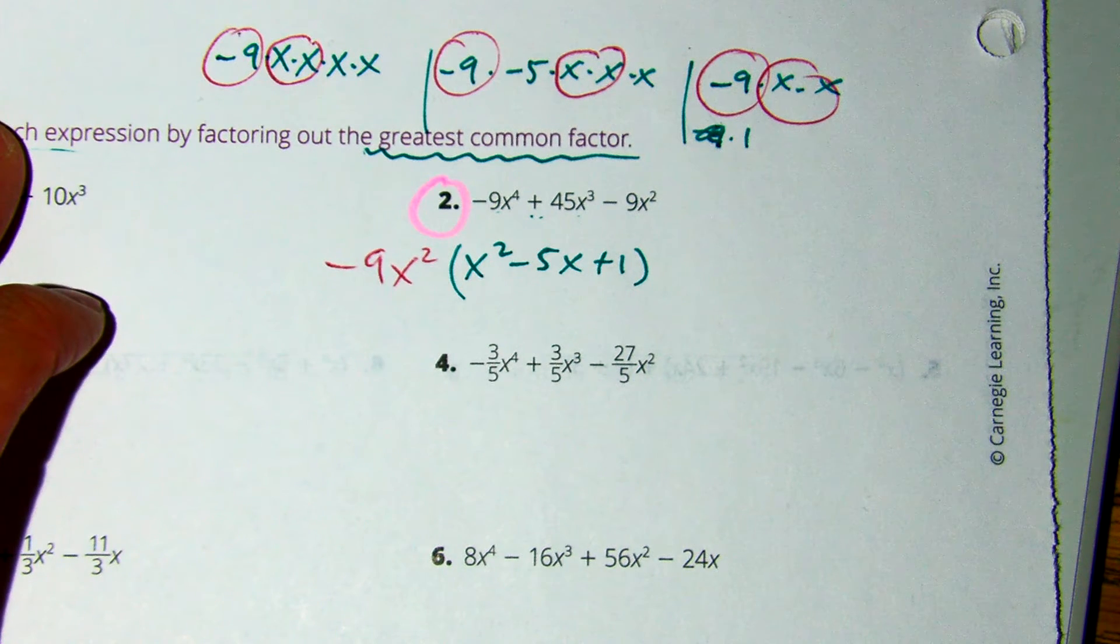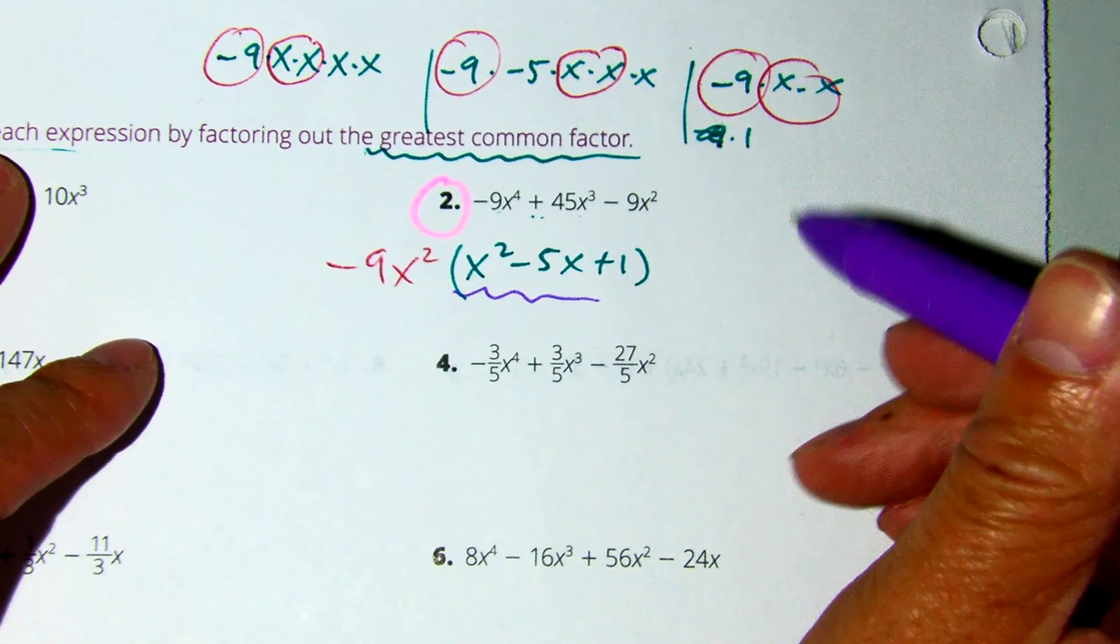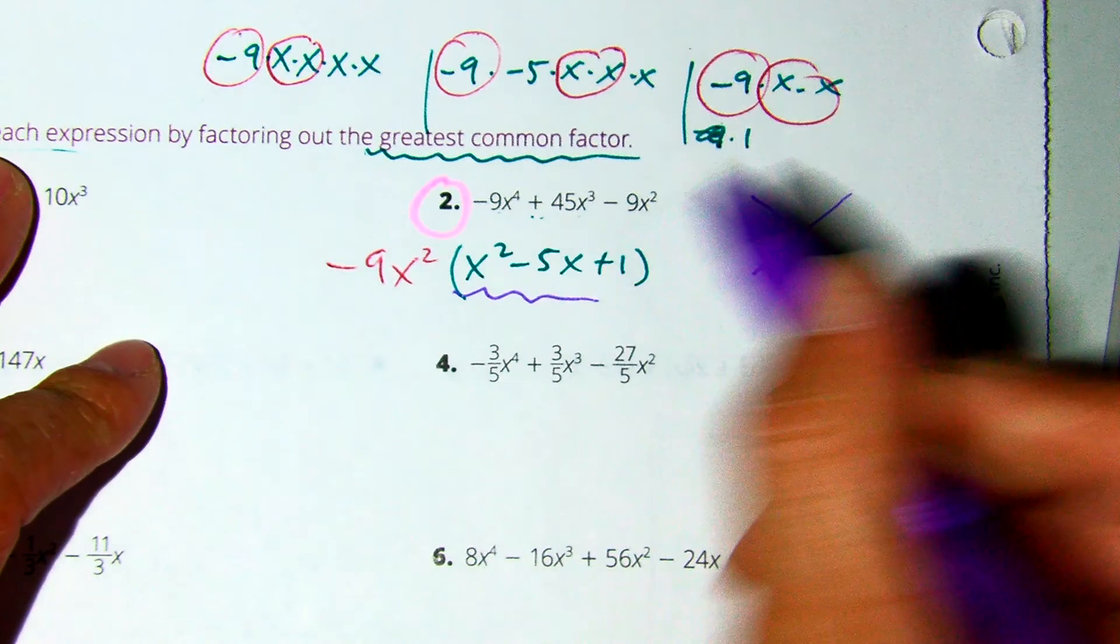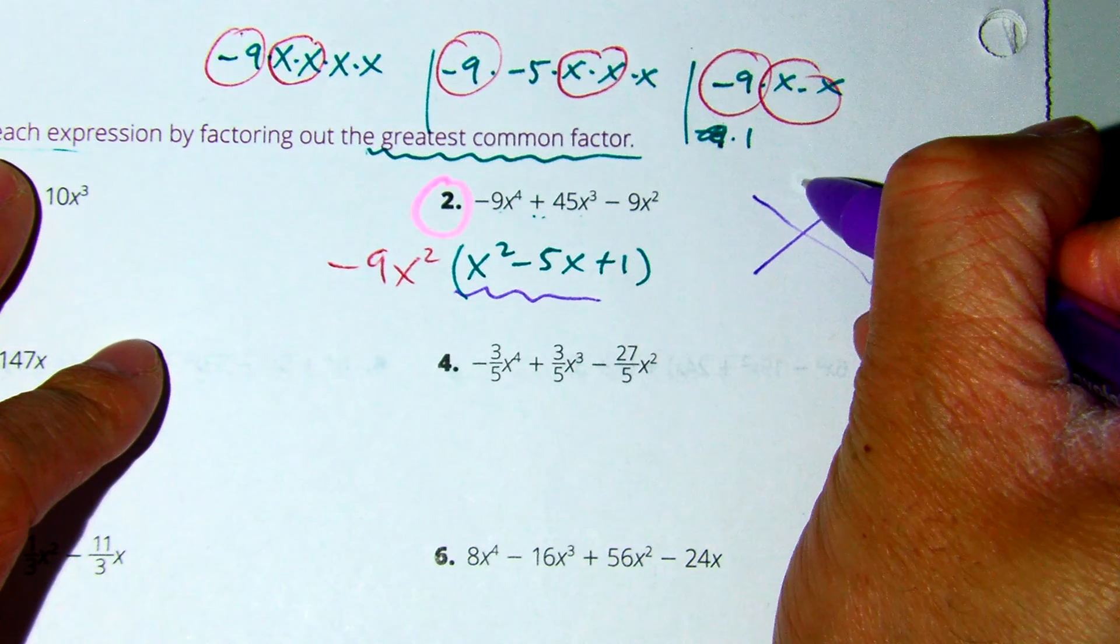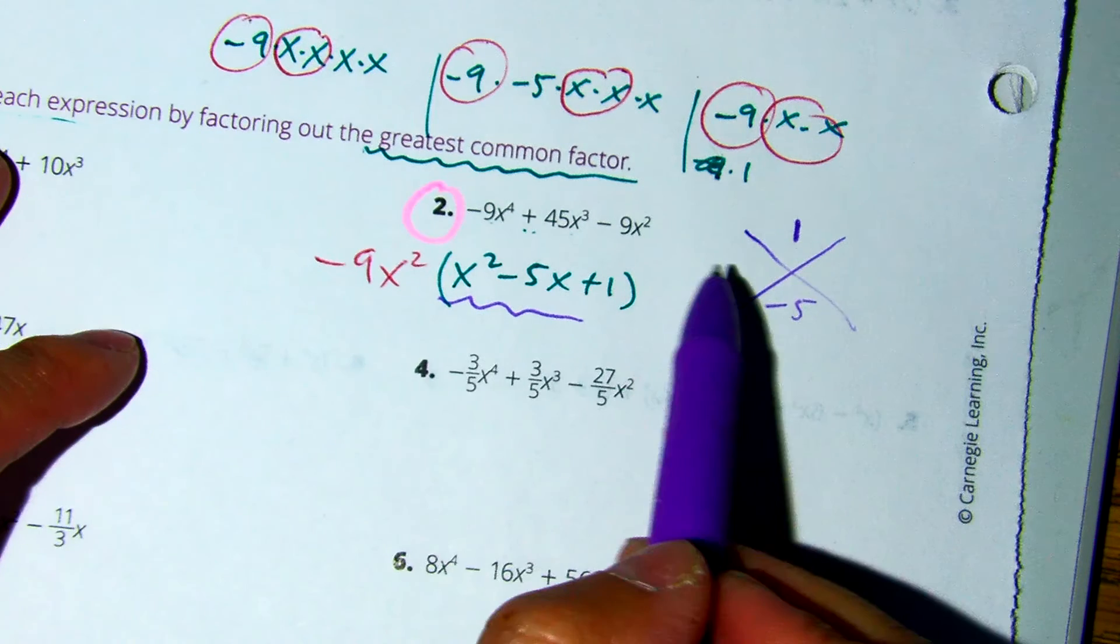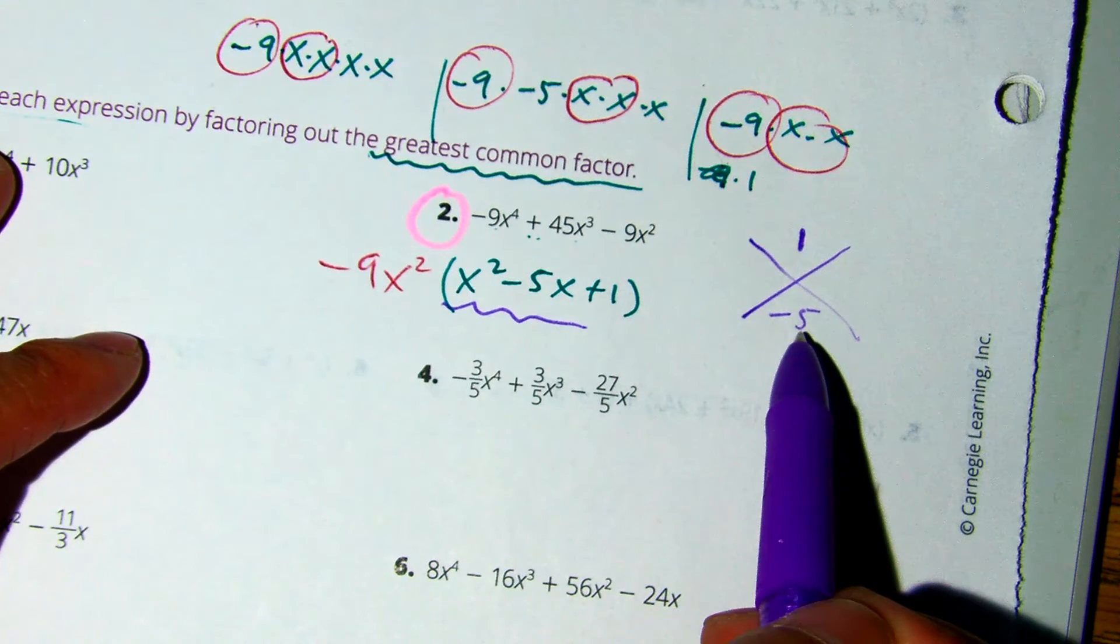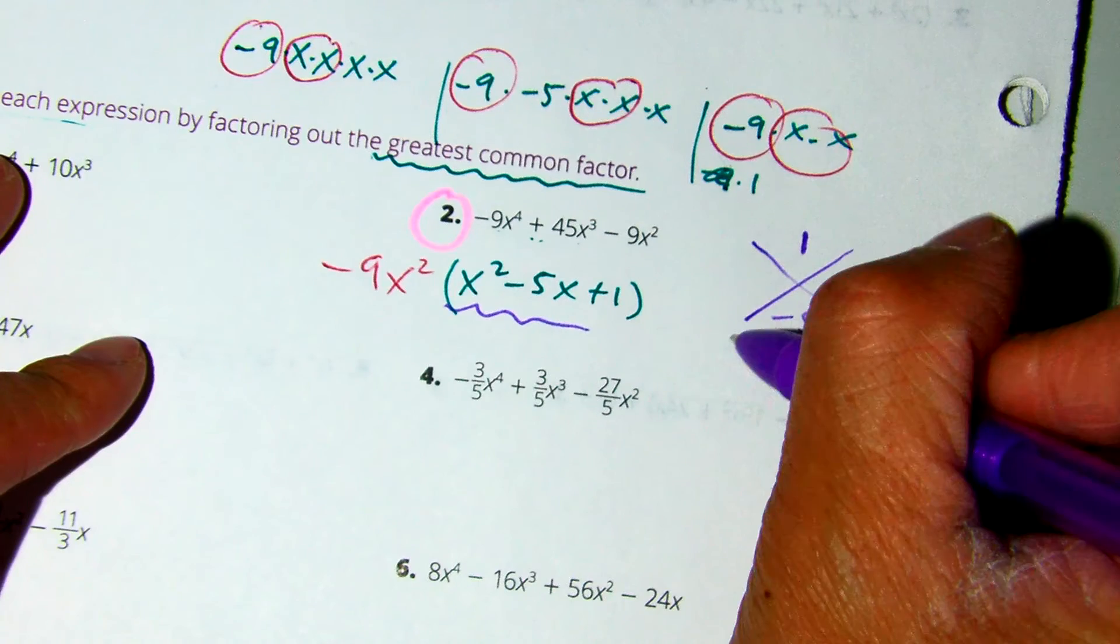Now, if you look at this number here in purple, you might be asking yourself, can I factor that again? Well, if I do a times c, I get 1, and my b value is negative 5. Class, are there two numbers that multiply to be 1 and then add to be negative 5? Any numbers? No.